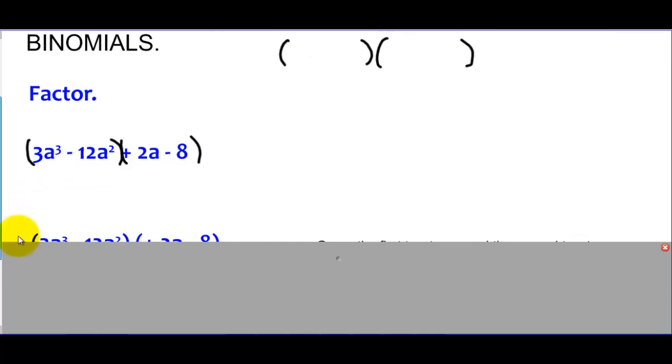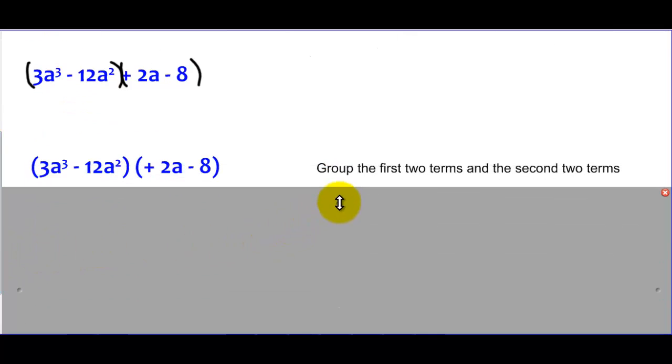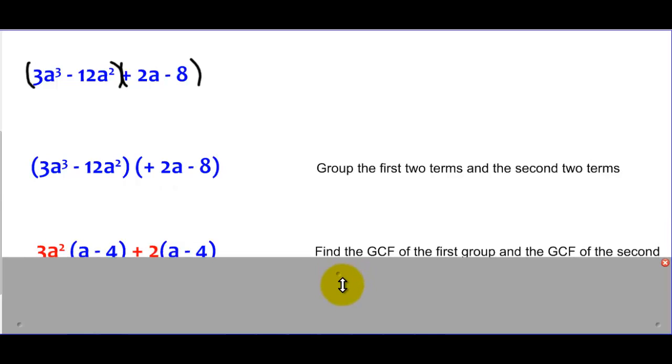So watch what happens after I do the grouping. We're going to do the grouping, and then after we group the first two terms and the second two terms, we're going to find that GCF and remove it. So if you notice, the 3A² got removed, and I rebuilt the expression and said, well, 3A² times A gives me 3A³. 3A² times negative four will give me negative 12A².